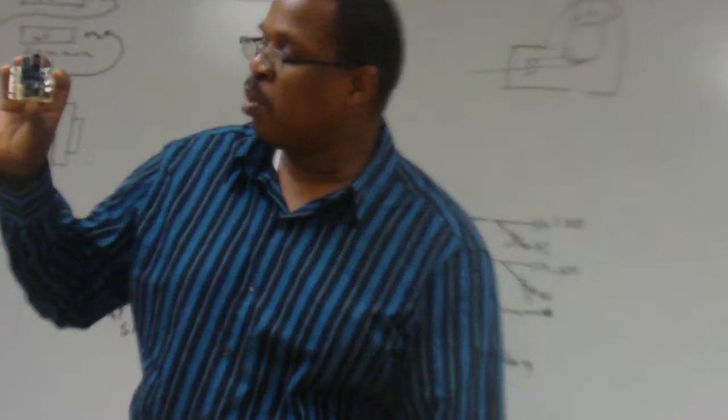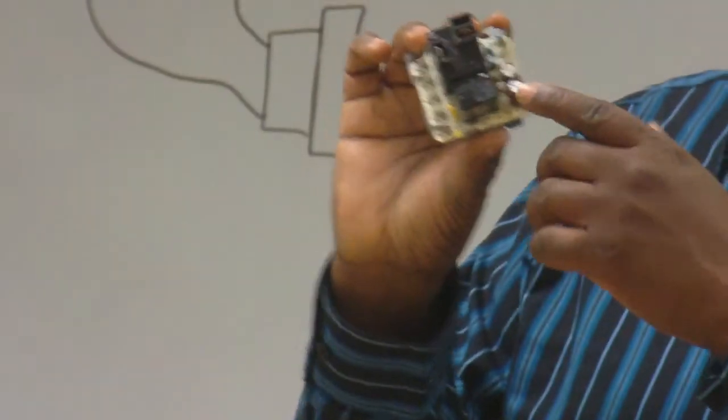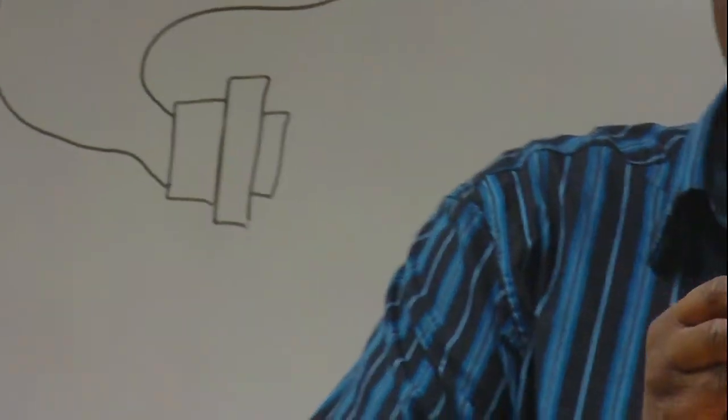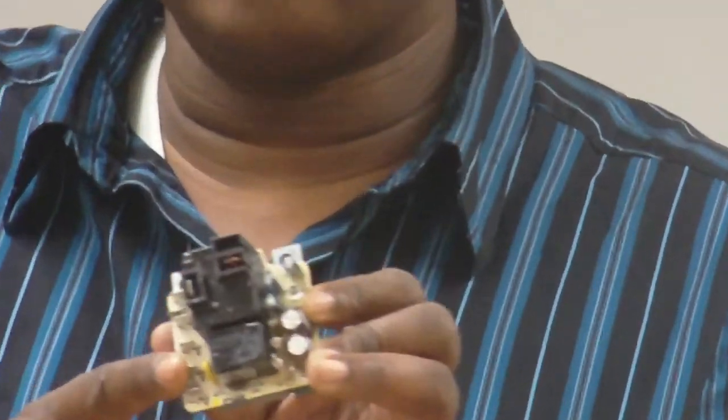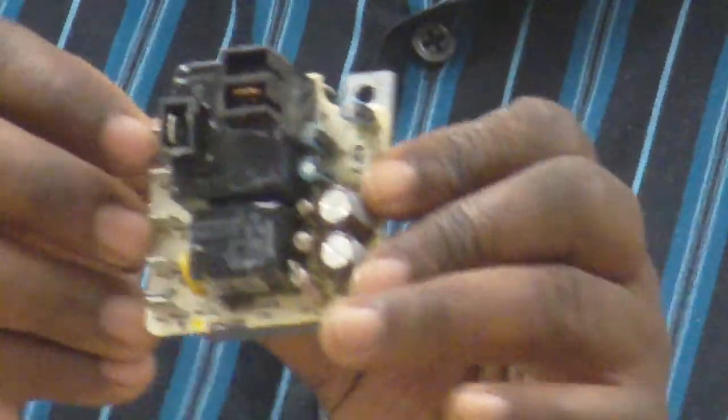And it too has a normally closed and a normally open circuit. And on the bottom is where we receive the 24 volts. Again, causes it to act like a sequencer. And here's some more. This is one by Trane. This has a little board on it. And whenever you see anything with a board, don't get scared of it. They're just trying to make it more efficient. They're trying to take AC current and turn it into DC current to make it more efficient, save energy, operate more efficiently.